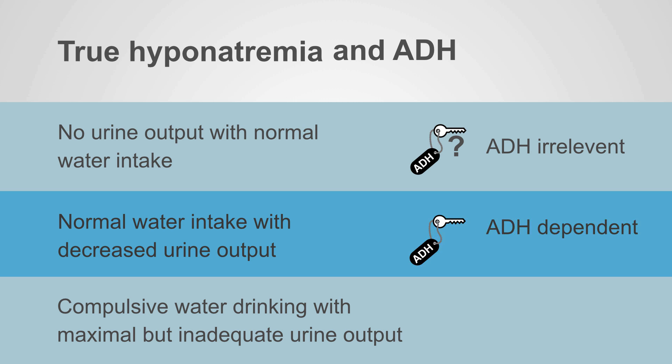The second category is patients with normal water intake and decreased urine output. The decreased urine output is completely driven by ADH, so we call this ADH-dependent hyponatremia, and we'll be talking about this in subsequent chapters.